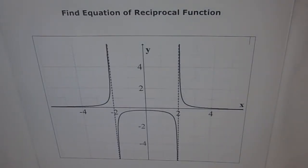Hello, let's try to find the equation of this reciprocal function. Here you can see we have two vertical asymptotes. One is at plus 2, the other one is at minus 2.